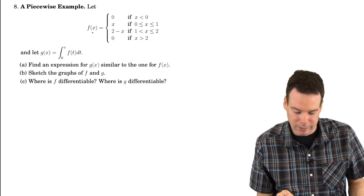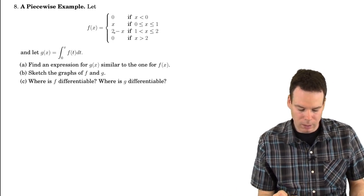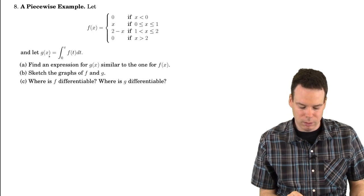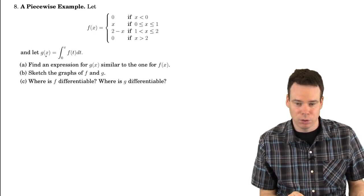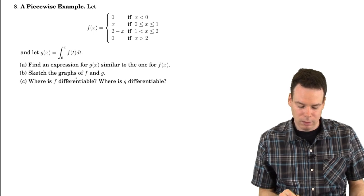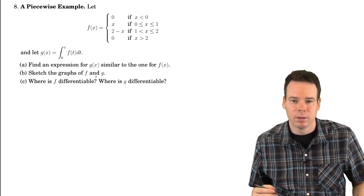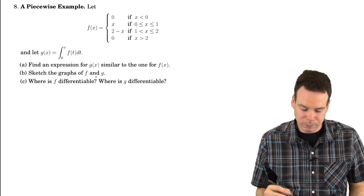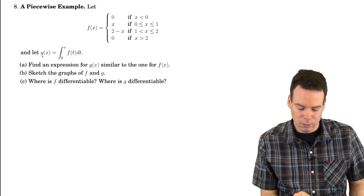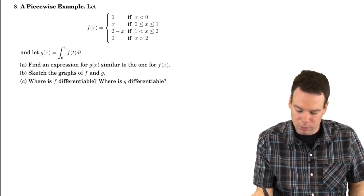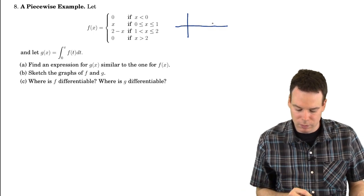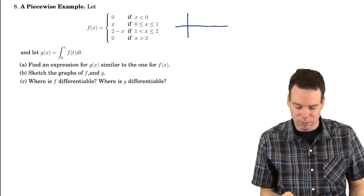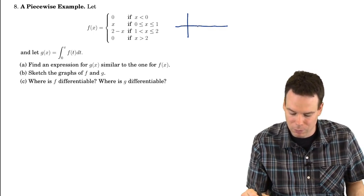In this last example, we're going to look at this piecewise defined function and do investigation on constructing the function G, the integral function, and then look at sketching its graph and deciding if it's differentiable or not. So maybe a first step would be let's just see what the function F looks like. We're not asked to sketch the graph of F until Part B but that's alright, we can sketch it now.